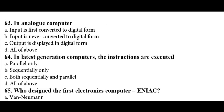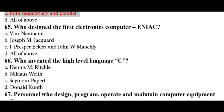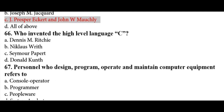In an analog computer, the input is never converted into digital form — option B is the answer. In the latest generation computers, instructions are executed both sequentially and in parallel. The first electronic computer ENIAC was designed by J. Presper Eckert and John W. Mauchly. Dennis M. Ritchie invented the high-level language C.